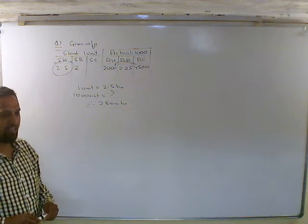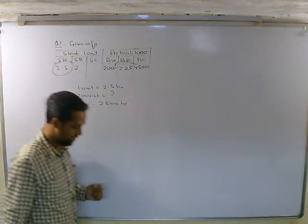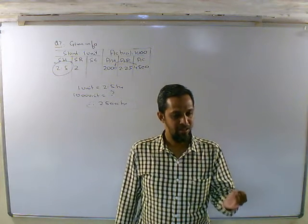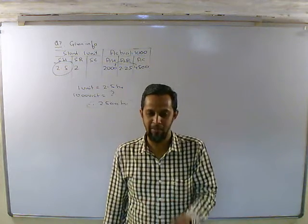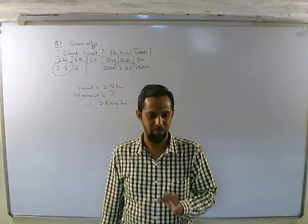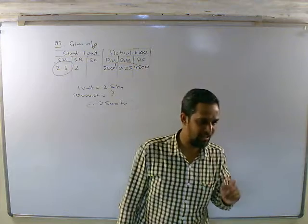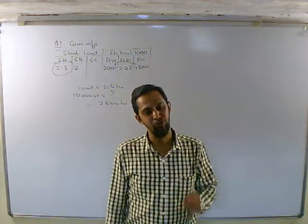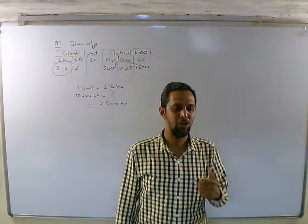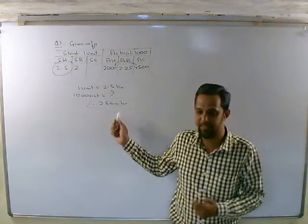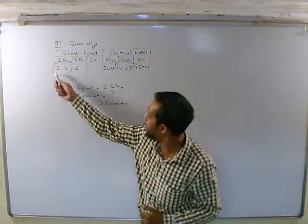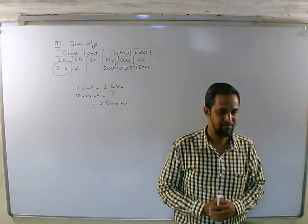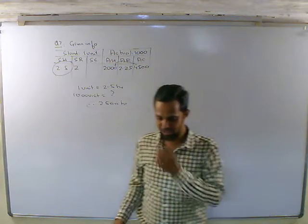Idle time वाला करने के लिए — आप कितने variances निकाल सकते हैं? तीन: पहला cost variance, दूसरा rate variance, तीसरा efficiency. लेकिन जब idle time आए, तो पहले time variance निकालो. Efficiency कब हो रही है जब idle time हो? Mix variance और yield variance नहीं कर सकते — mix और yield के लिए variety of labor होनी चाहिए. जब एक ही labor हो तो mix/yield नहीं होता. तो तीन variances निकालकर दिखाओ.